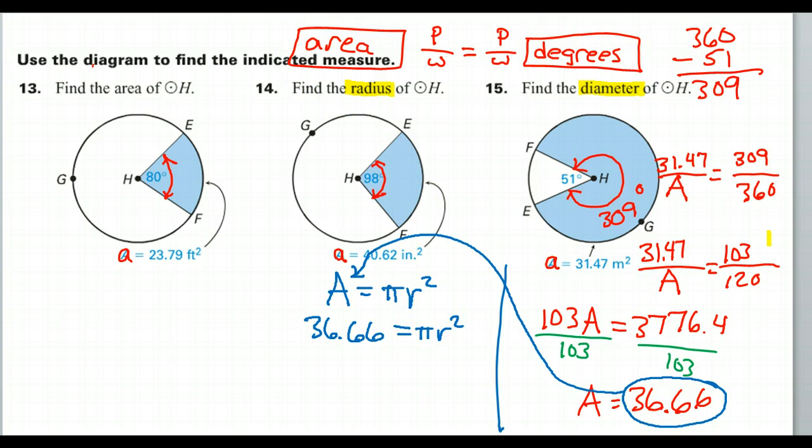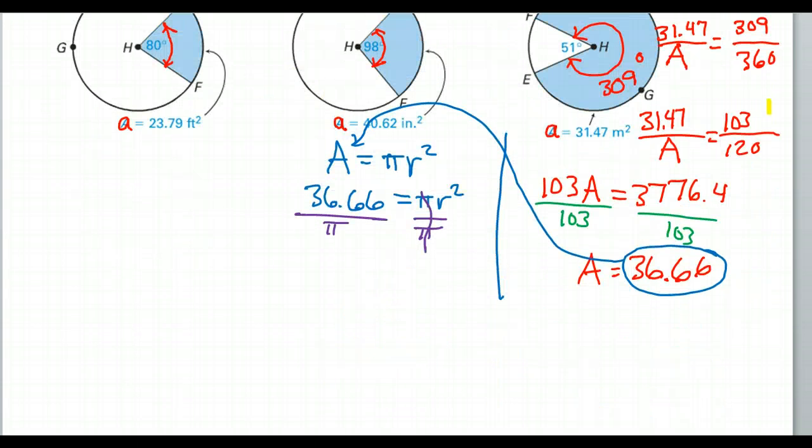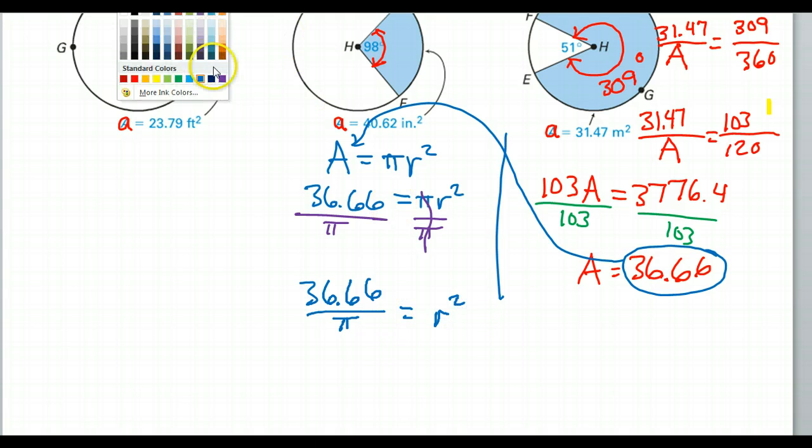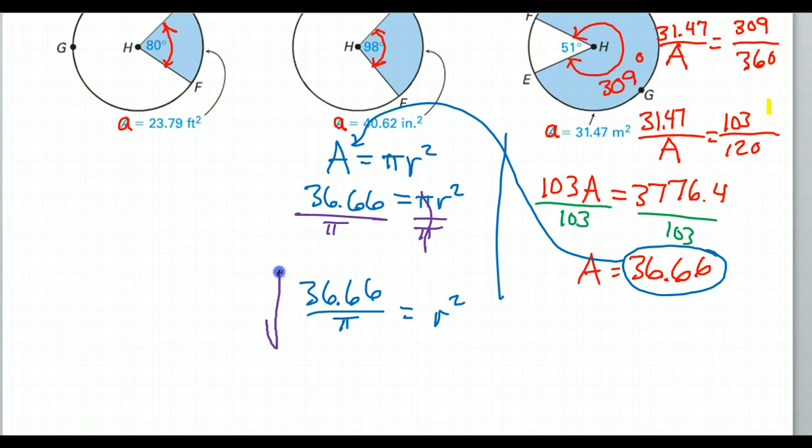So, of course, I'm going to divide by pi and take the square root. So, if I divide by pi on both sides. Okay, that is going to give me 36.66 over pi is equal to r squared. But then, we take that square root of both sides.